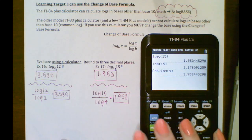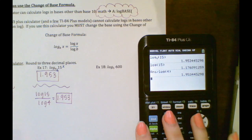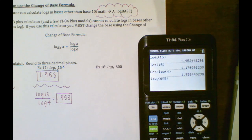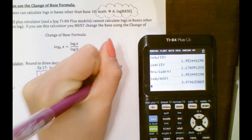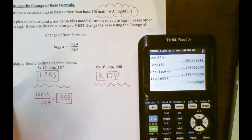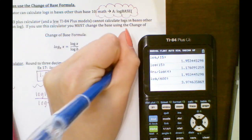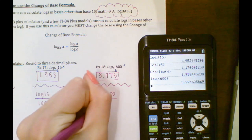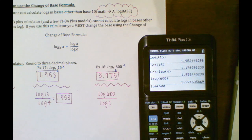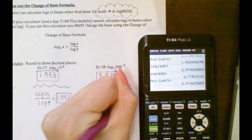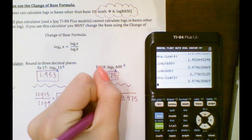One more — log base 5 of 600. On the calculator: Math, scroll up to log base, enter 5, 600, and we get 3.975. We round that up because of the 6 after the 4. If you need to use the change of base formula: b value is 5, x value is 600, so we have log 600 divided by log 5, which also gives us 3.975.